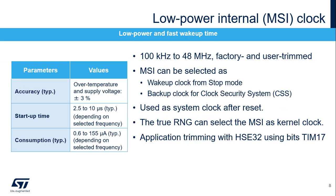The Low Power Internal Oscillator, or MSI, is a multi-frequency RC oscillator in the 100 kHz to 48 MHz range, which provides 3% accuracy and fast wake-up times. The MSI is trimmed during production testing and can also be user-trimmed. It can be selected as clock at wake-up from system stop, and is selected as system clock after reset. Some peripherals, such as the USB, can use the MSI as kernel clock. The MSI frequency can be trimmed versus HSE by using the TIM 17 bits in capture mode.